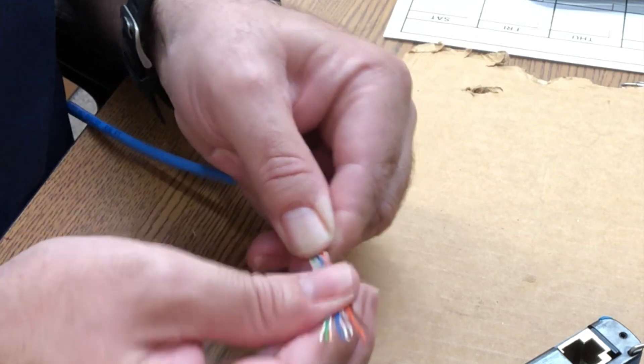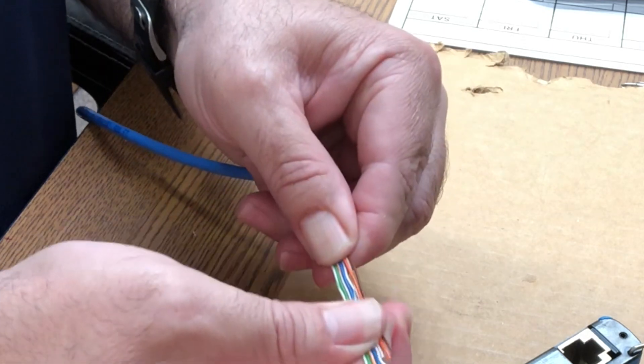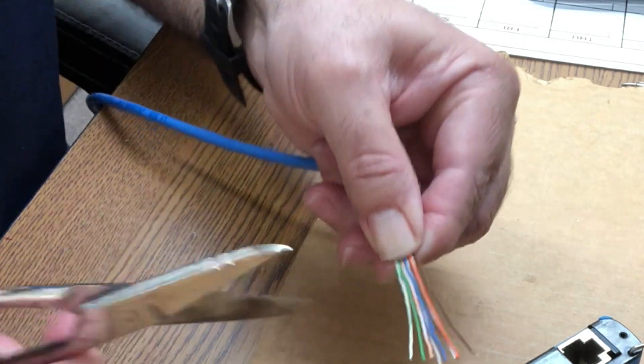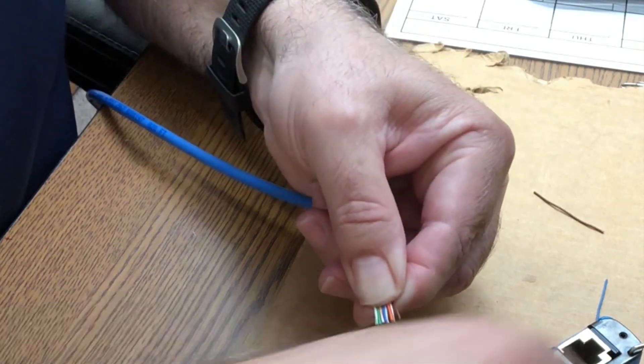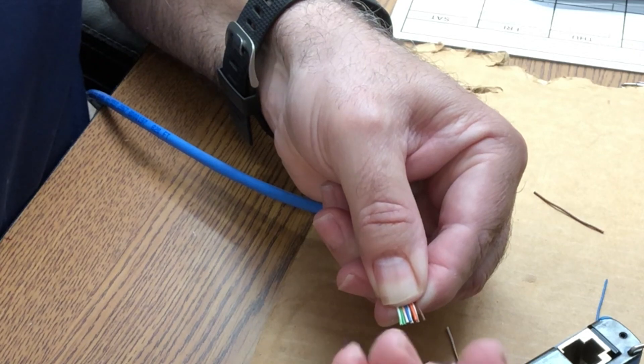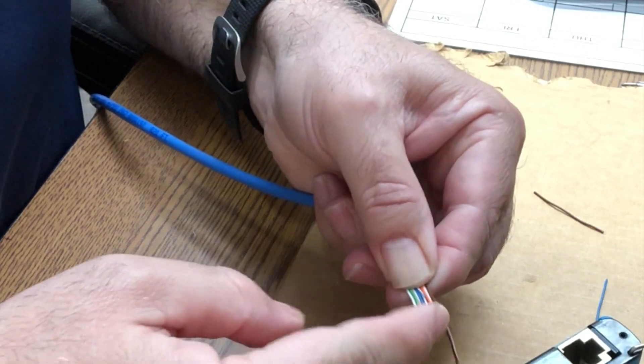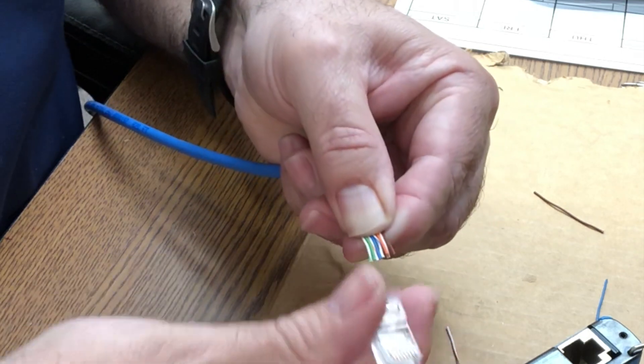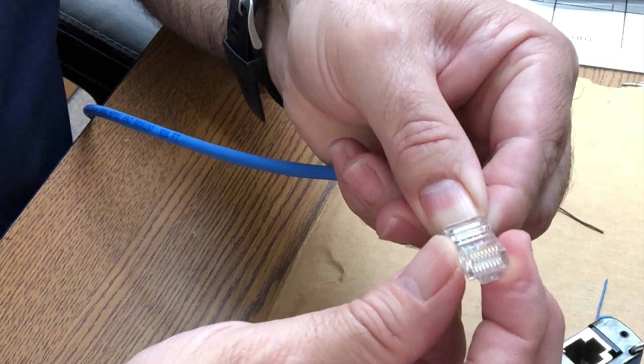What I like to do is once I got them like that I'll take my shears and just run the scissors right up on them like that. Now we'll slide our wires, running the shears keeps them nice and flat makes it easy for putting them in.